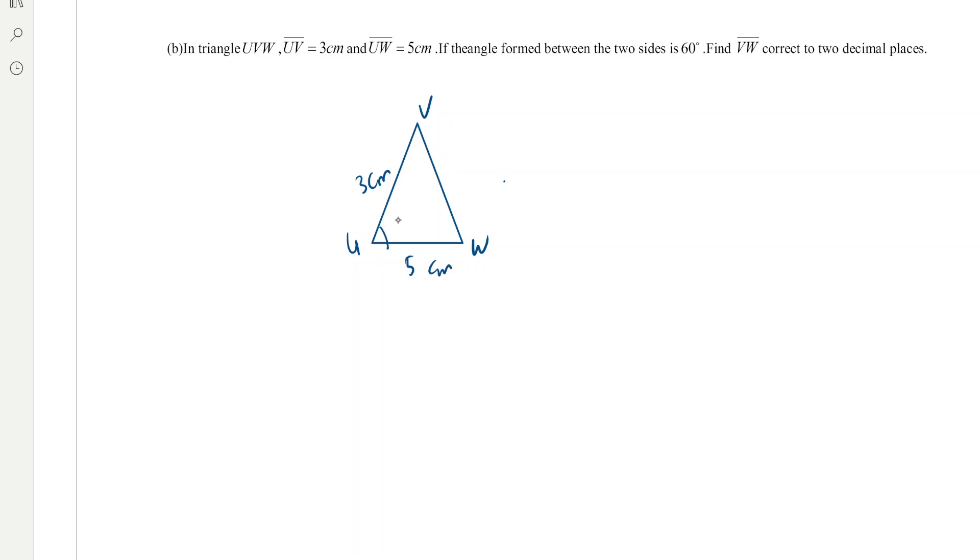By using cosine rule, we'll be using cosine rule. You're going to say that VW square will be UV square plus UW square minus 2 times UW times UV cosine of the angle between, that is angle VUW.